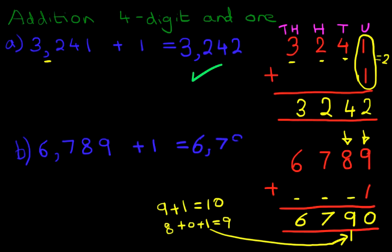6,790. 6,789 plus 1 is 6,790. That is correct. And that is a very easy way of doing the addition of 4 digit numbers and the number 1.